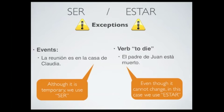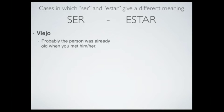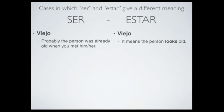Now we're going to see some words that can go with ser or estar, but the meaning is a bit different. Let's see some examples. The word 'viejo' means old. If we say 'alguien es viejo,' it means that the person was probably already old when we first met them — for example, your grandfather or grandmother: 'ellos son viejos.' But if we say 'alguien está viejo,' it means that the person looks old.